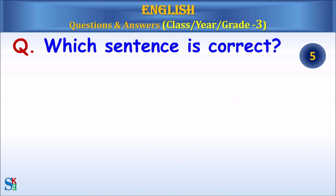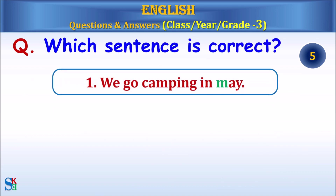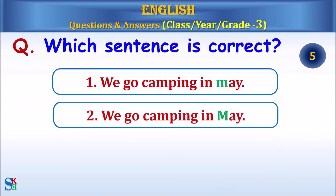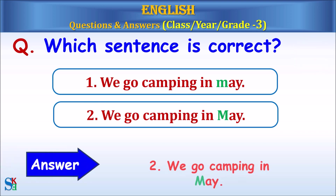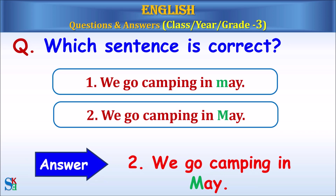Question: Which sentence is correct? Answer: The second one — We go camping in May. The M in May should be capital.